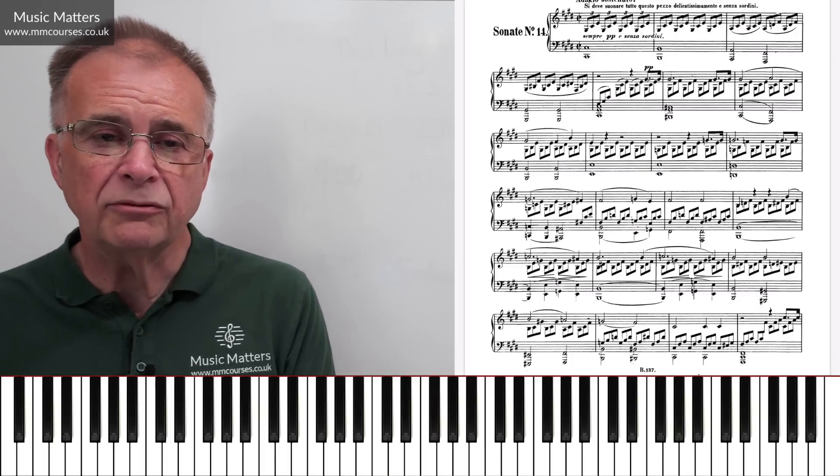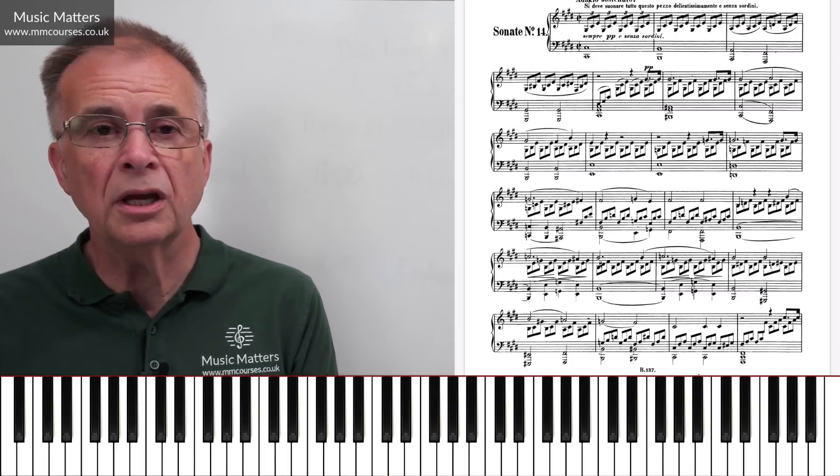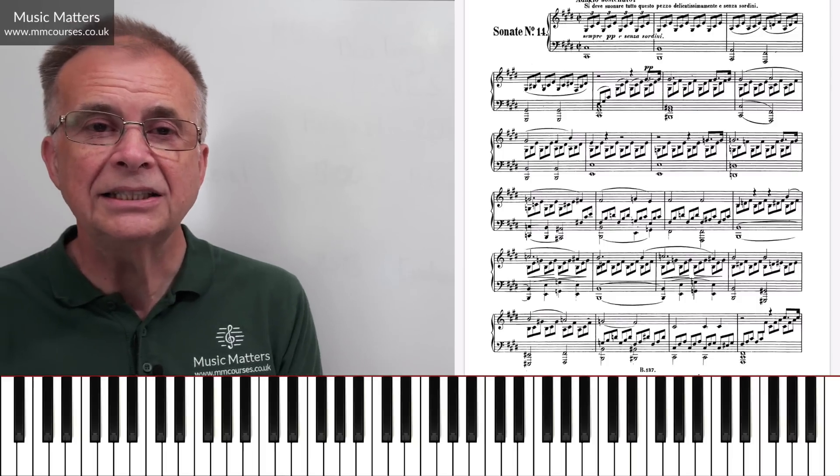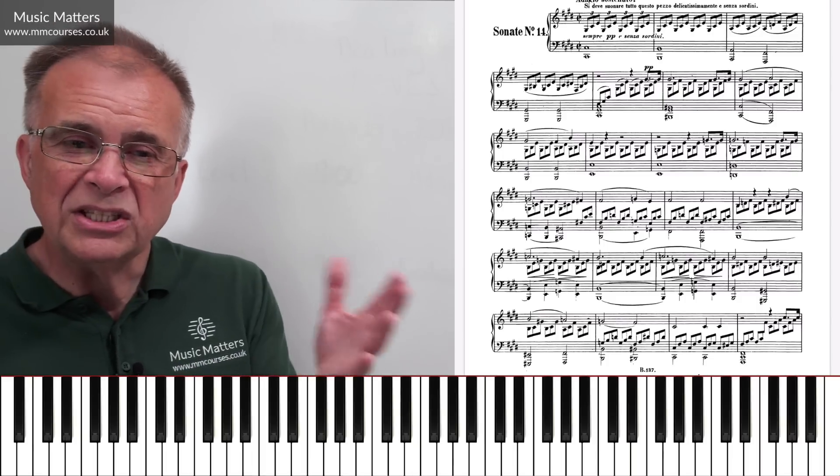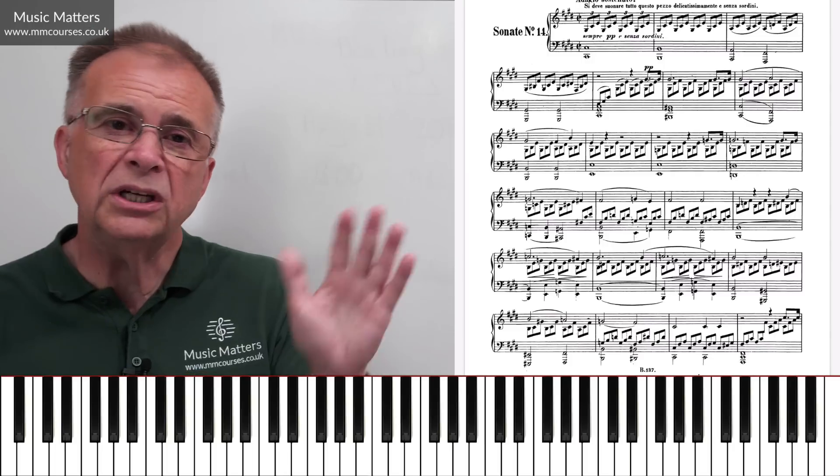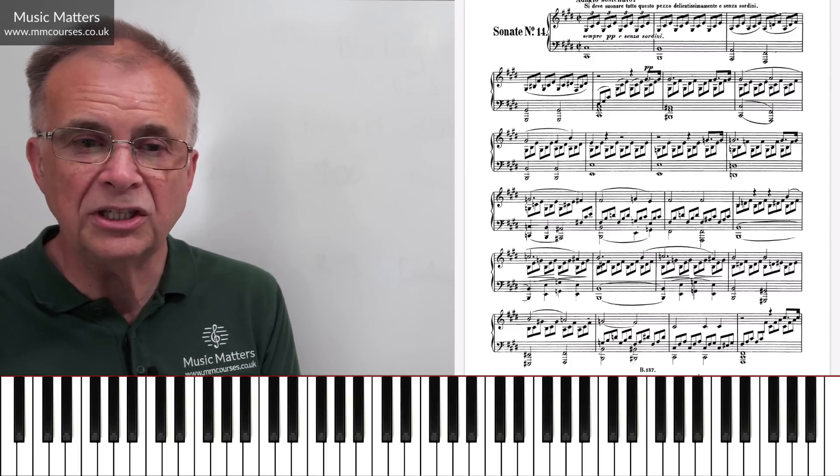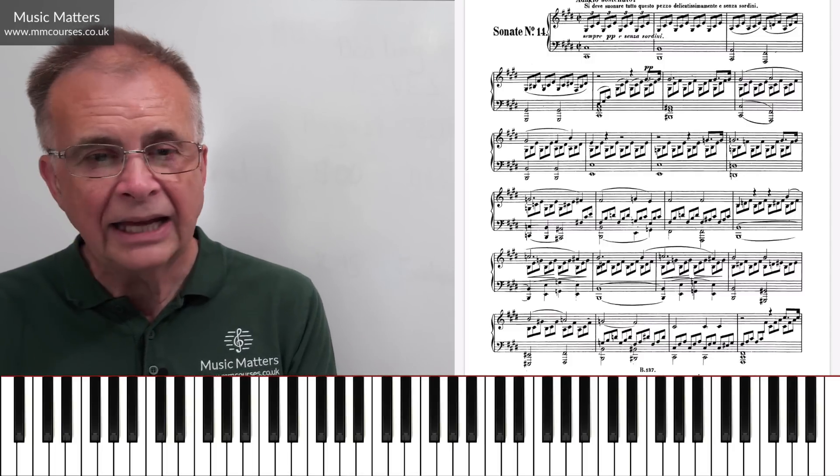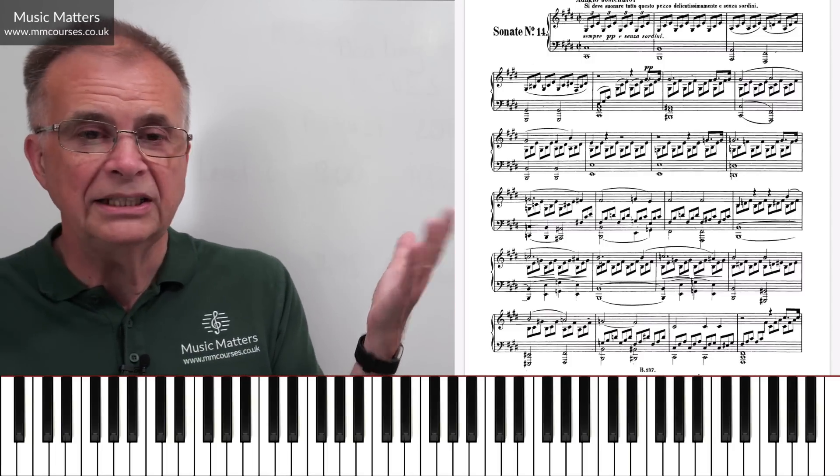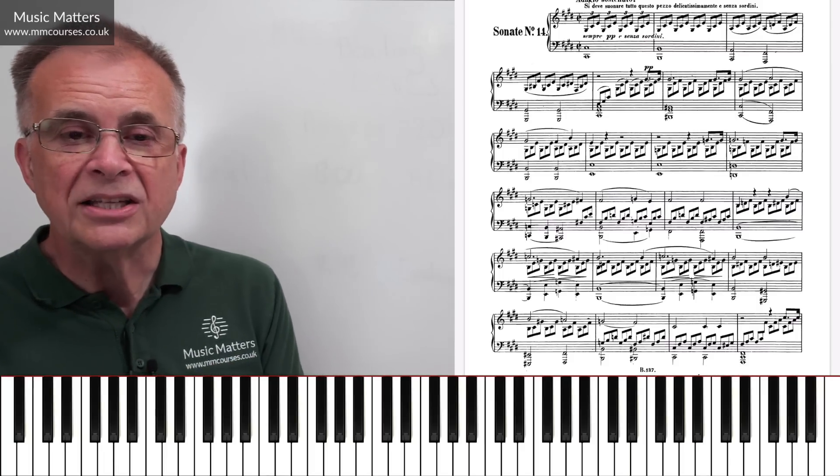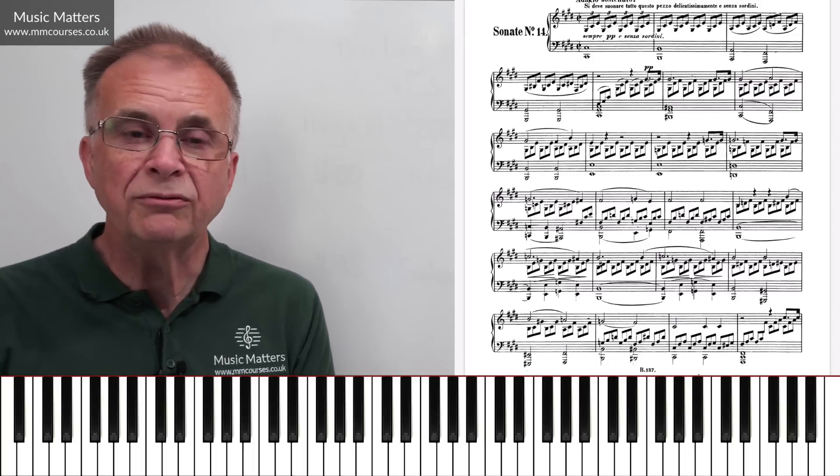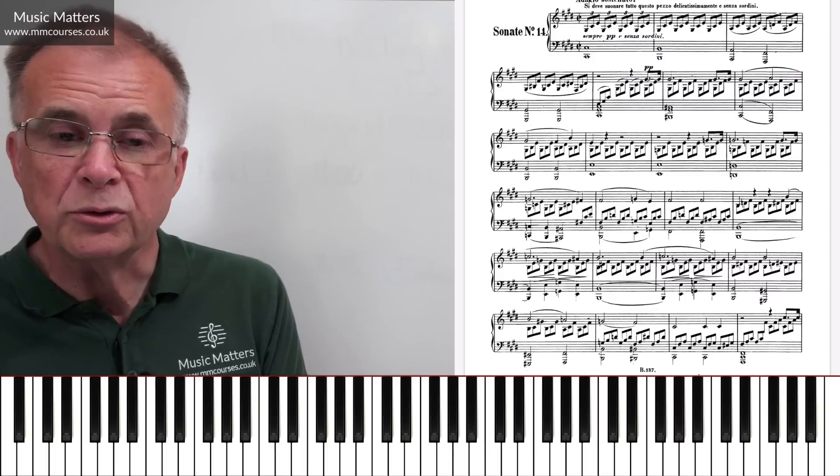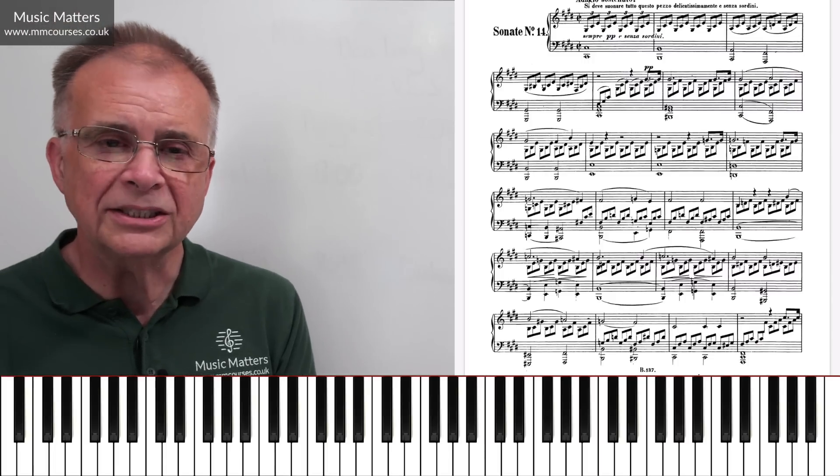Well, it's a piece that Beethoven wrote. We think it wasn't commissioned. He dedicated it to one of his students at the time, but he finished writing it in 1801. So he's in his early 30s when he's written this piece. And the title Moonlight is not a title that Beethoven gave it. It's a title that kind of came via a critic who was reviewing the piece after it was written.